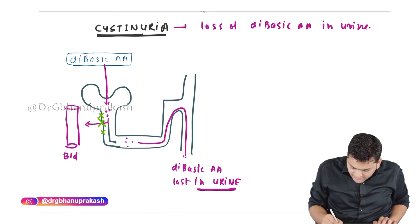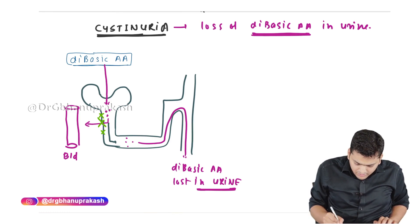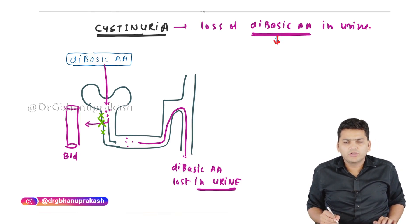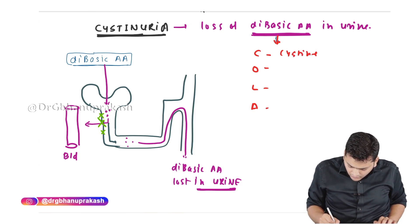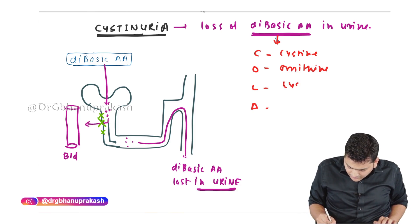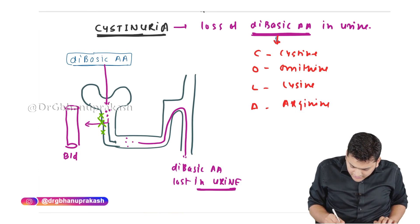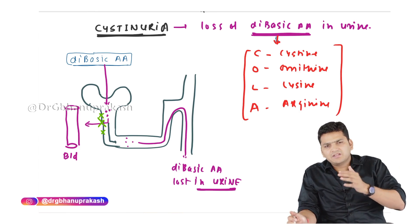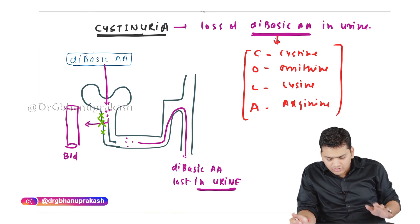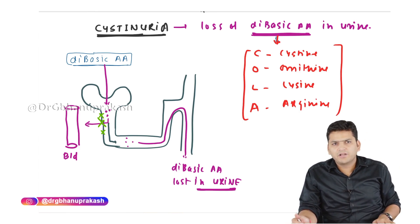The mnemonic for the dibasic amino acids lost in cystinuria is COLA: C stands for cysteine, O stands for ornithine, L for lysine, and A for arginine. If cysteine, ornithine, lysine, and arginine are lost in the urine, that is called cystinuria.